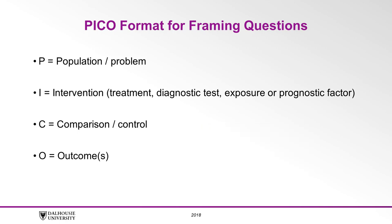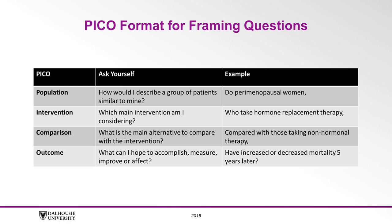Let's work through an example using this PICO matrix. To identify your population, ask yourself: how would I describe my patient? For example, perimenopausal women. What is the main intervention I am considering? In this case, we're interested in hormone replacement therapy. Our comparison group is those taking non-hormonal therapy. The outcome element of your question should describe what you hope to accomplish, measure, improve, or affect, such as increased or decreased mortality five years later.